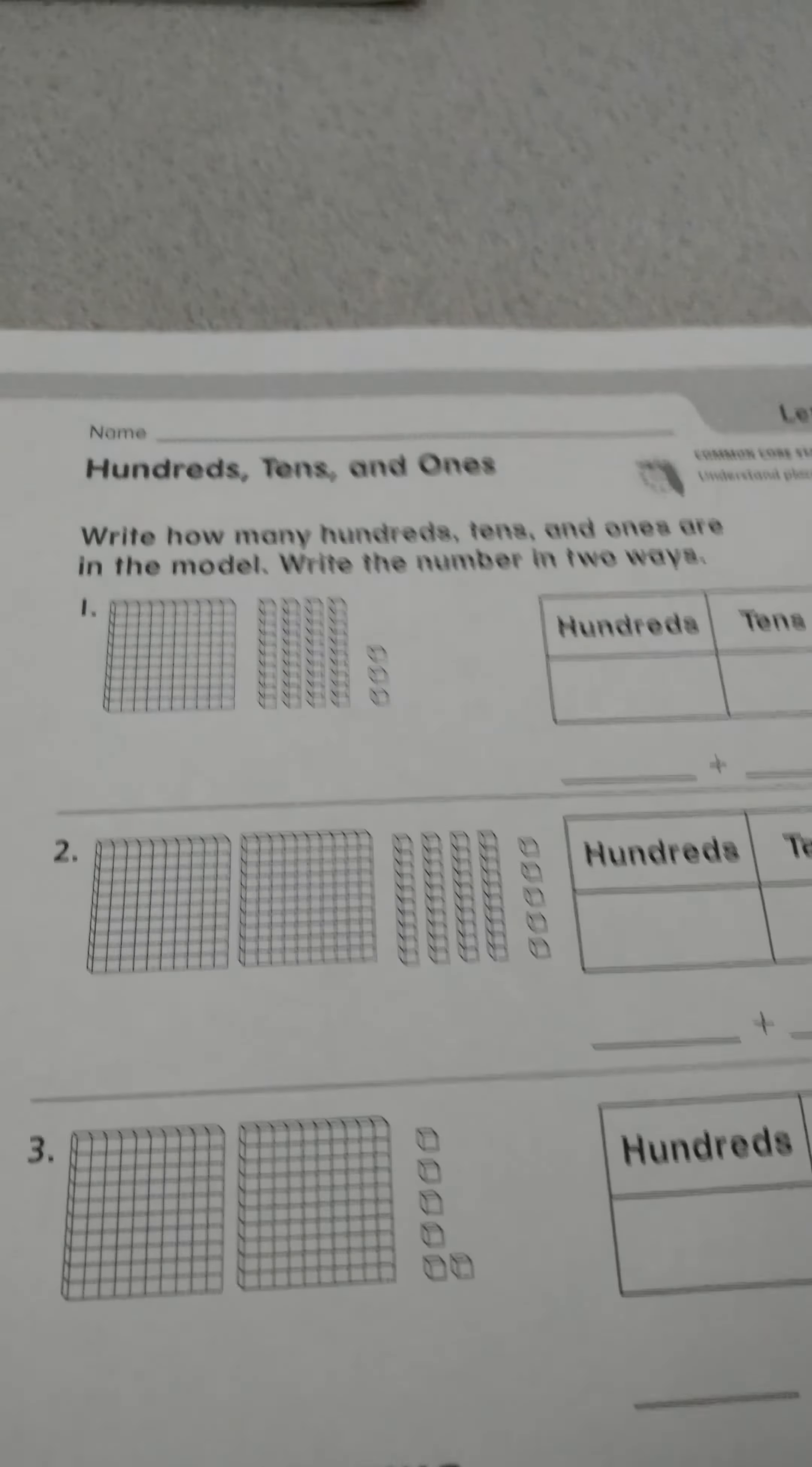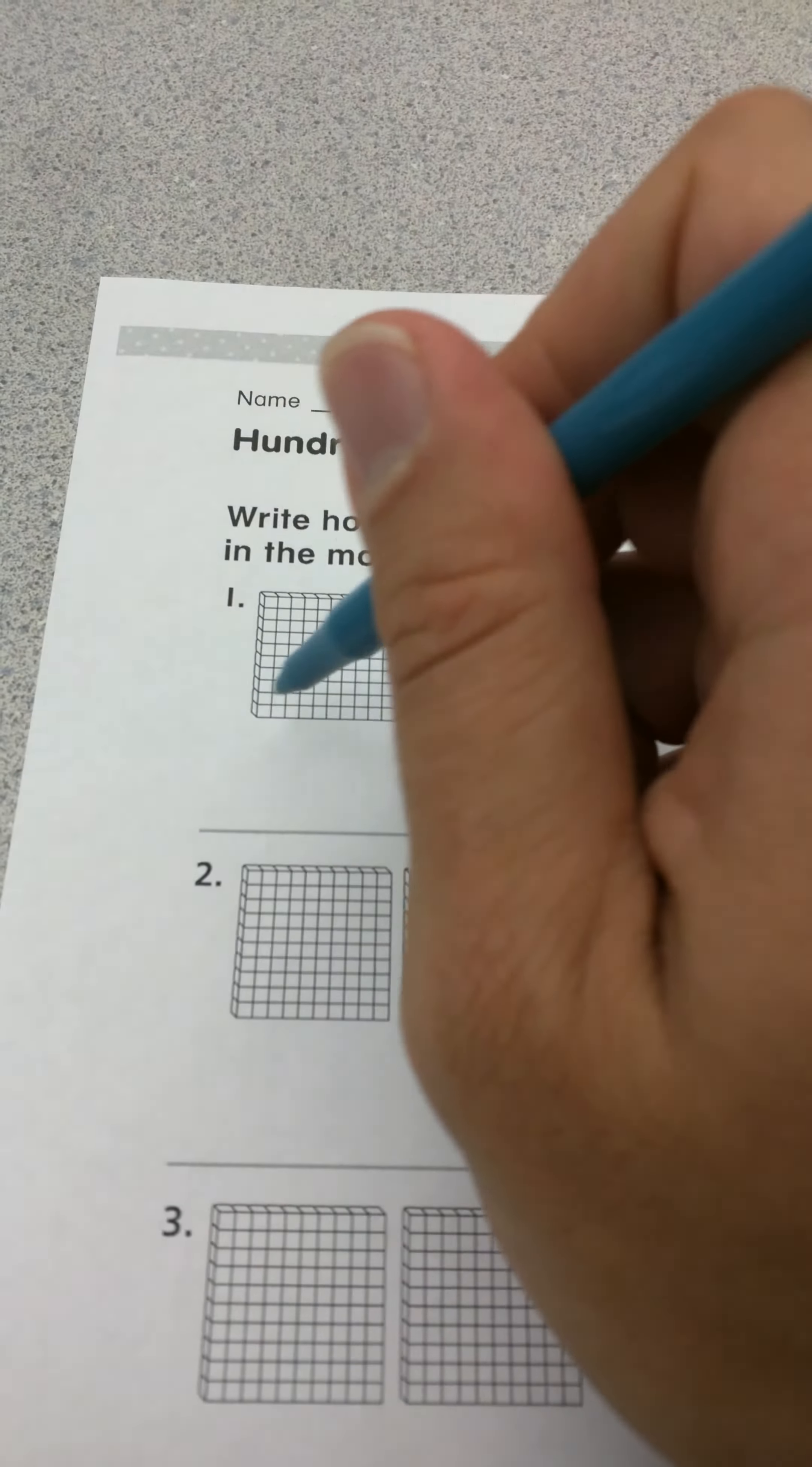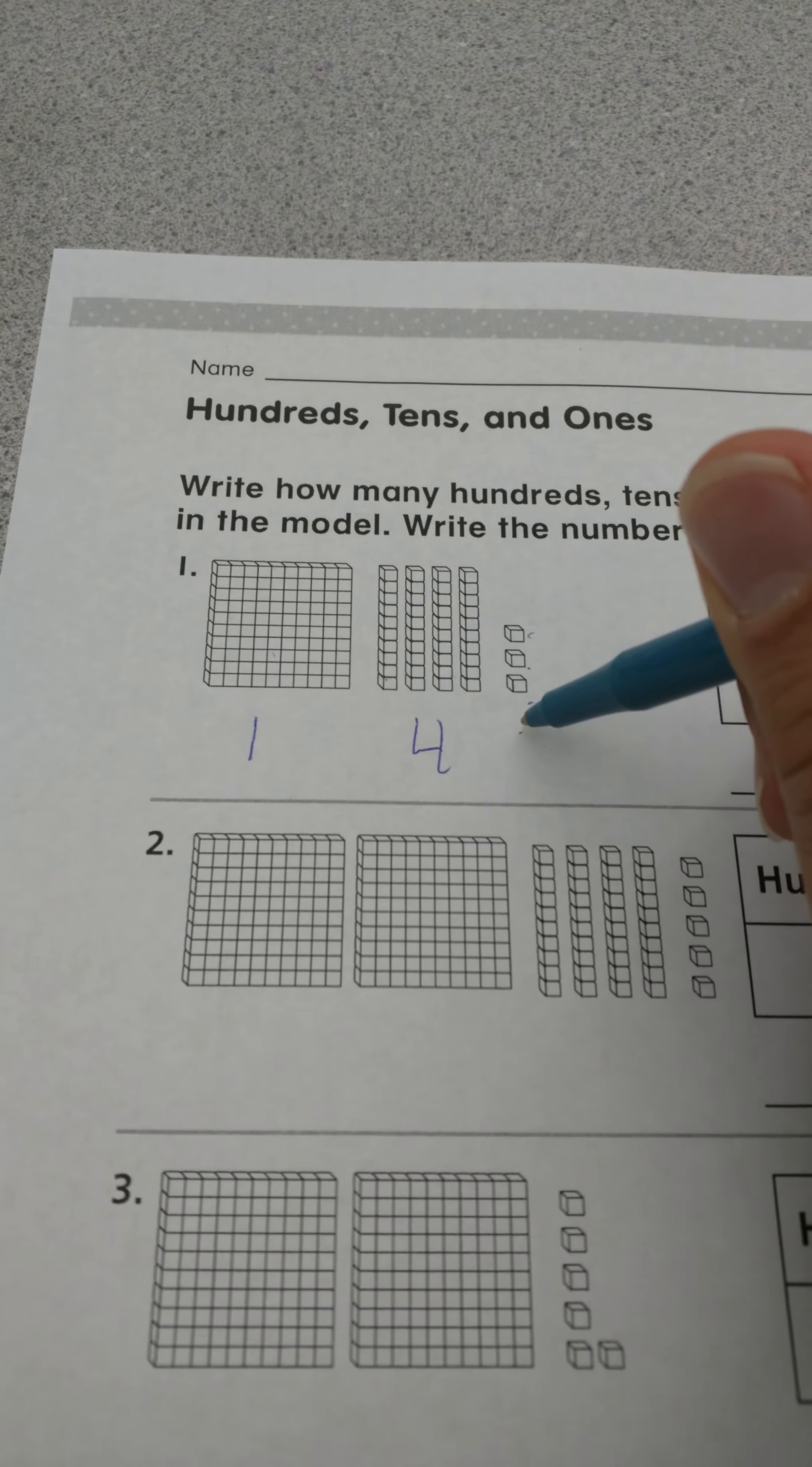So let's just look at what we have so far. And sometimes it helps, and you can draw or write right here. I know I have 1 hundred, 1, 2, 3, 4 tens, and I have 3 ones.